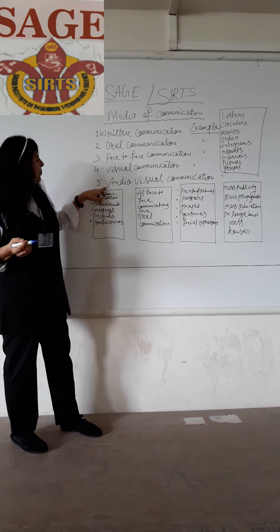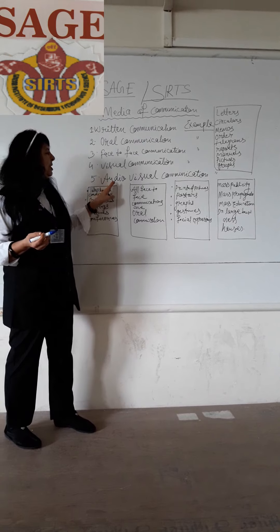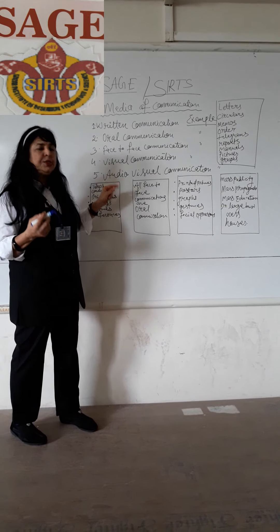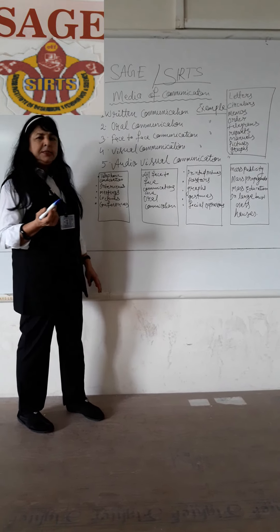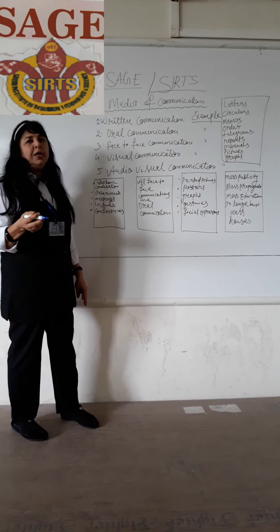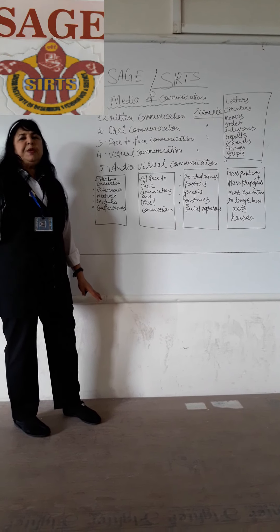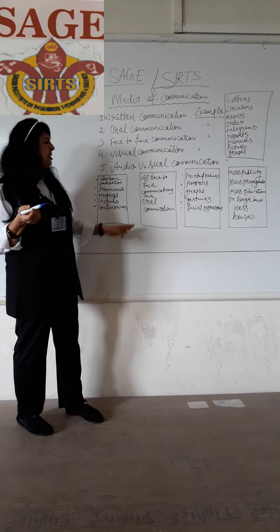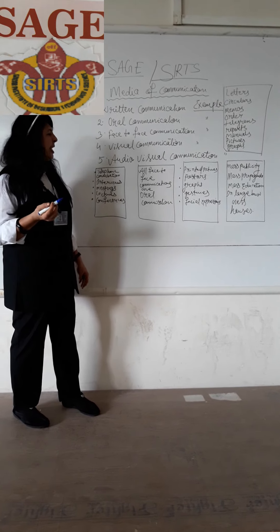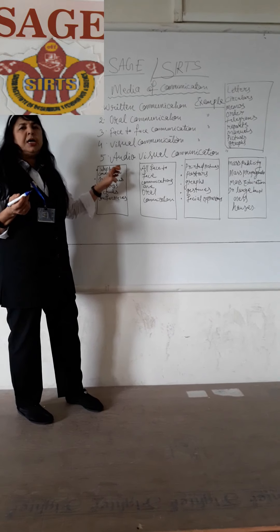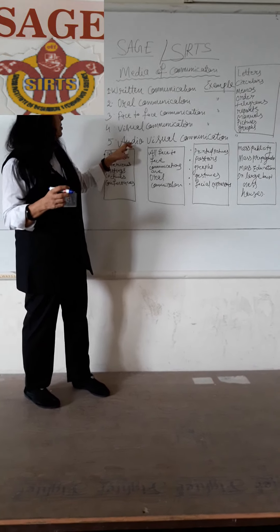The next type is audiovisual communication. During elections, audiovisual communications are used in very large numbers — for mass public publicity, mass propaganda, and mass education. Mass education means when we give speeches in conferences regarding education as a speaker or leader. In large business organizations, audiovisual communication is also used, combining both visual and audio.